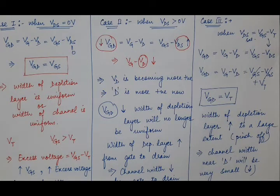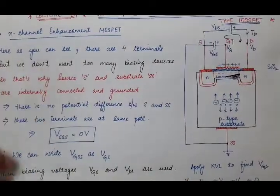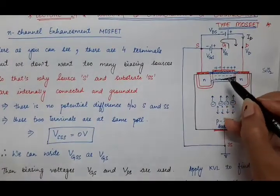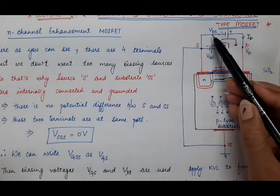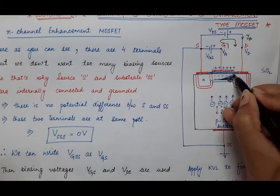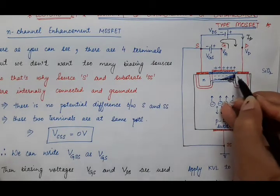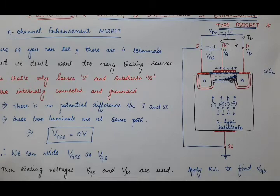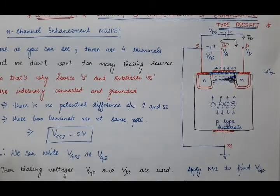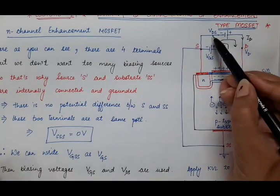So these are the three cases. After pinch-off, when VDS is further increased, the drain current remains constant through the MOSFET. When VDS equals VGS minus VT, the width of the depletion layer increases further near the drain side and the channel width decreases to a large extent. When VDS is increased above VGS minus VT, the drain current remains constant. This is known as the pinch-off condition and that value of VDS is known as VDS saturation.